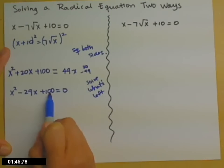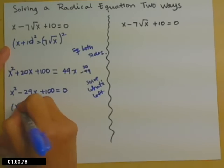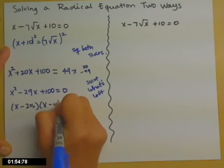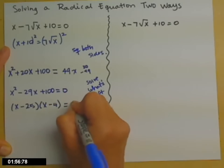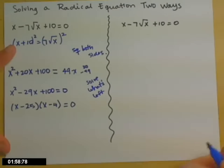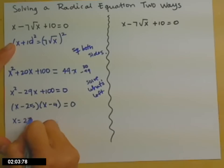Pair of factors that multiply to 100, but add to give 29. x minus 25 times x minus 4. When you've been doing it for 30 years, you'll find the pair is that fast as well. So multiplication problem equals 0. The way that will happen is if x is 25 or x is 4.